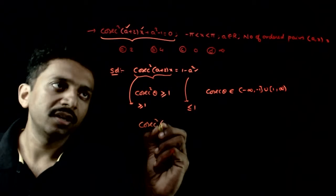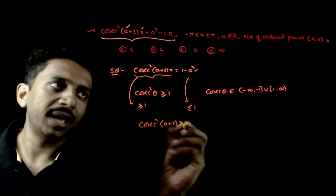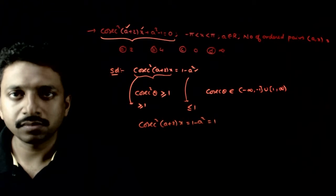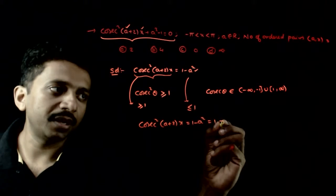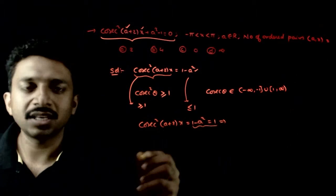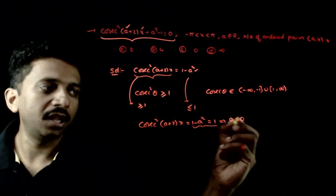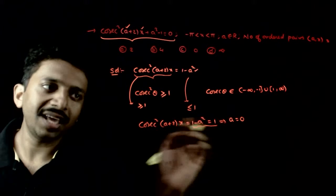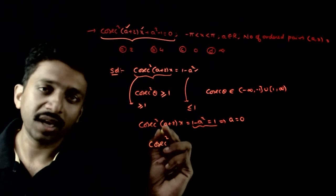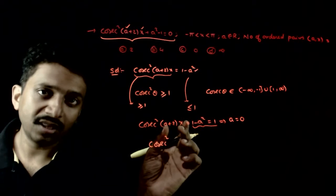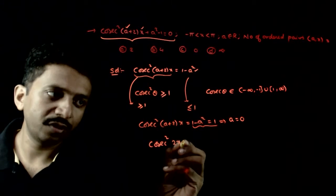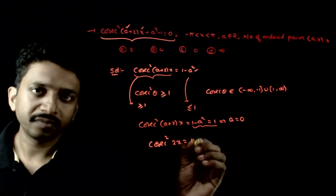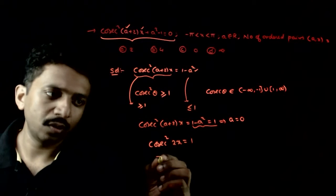Both sides must be equal to 1. So cosecant squared (a + 2x) = 1 minus a squared = 1. For 1 minus a squared to equal 1, a has to be equal to zero. Once a is equal to zero, cosecant squared (a + 2x) becomes cosecant squared (2x), which must equal 1.